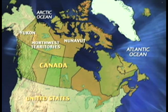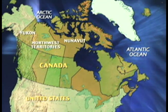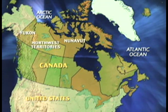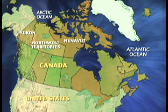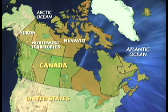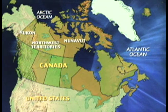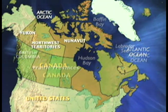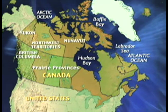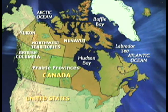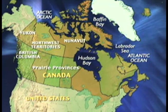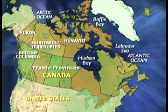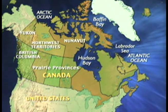More than a third of Canada is home to less than 1% of its population. This largely frozen land consists of Nunavut, the Northwest Territories, and the Yukon. Stretching across all of Canada, the territories are bordered by the Labrador Sea to the east, the Hudson Bay, the Prairie Provinces, and British Columbia to the south, and the Arctic Ocean and Baffin Bay to the north.